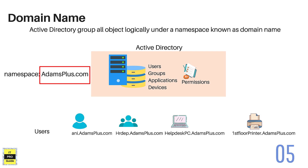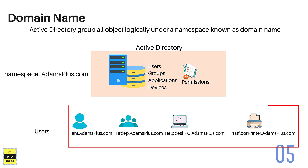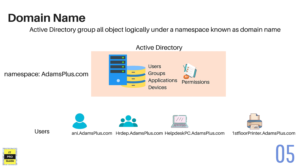This makes it easier to identify a user object. For example, a user named 'Any' will be identified in Active Directory as any.adamplus.com, where adamplus.com is the namespace. A group like HR Department can be identified as hrdepartment.adamplus.com. A PC can be identified by its name, such as helpdeskpc.adamplus.com.